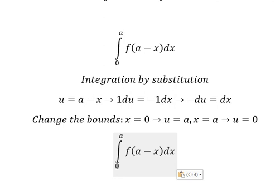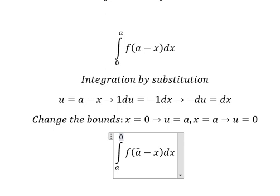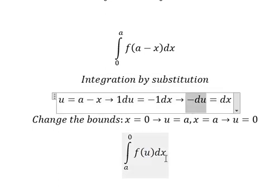So 0, that is about a, and a, that is about 0. a minus x, that is about u. The dx, that is about negative du.